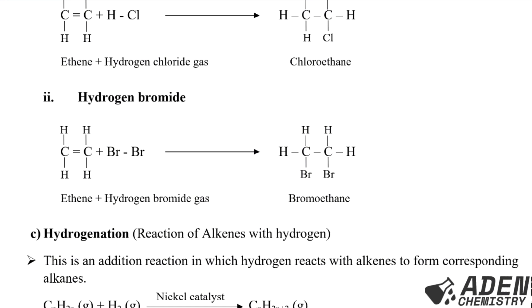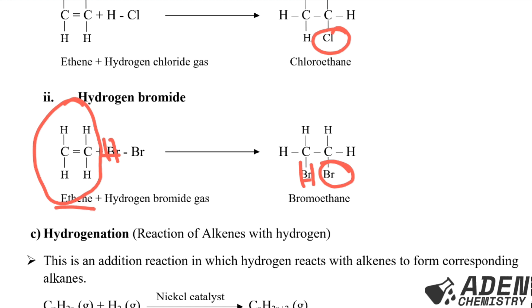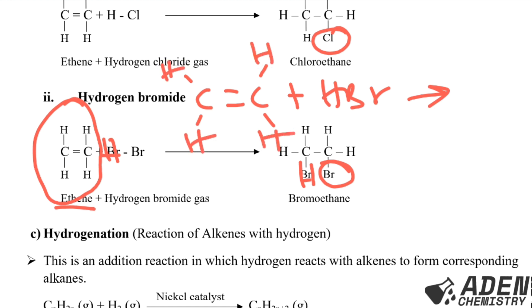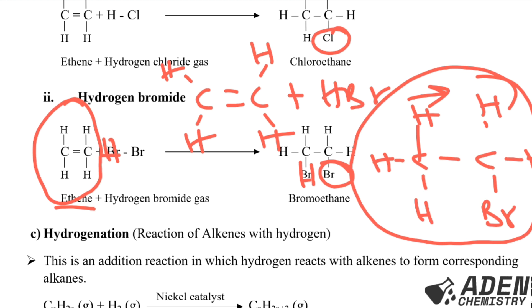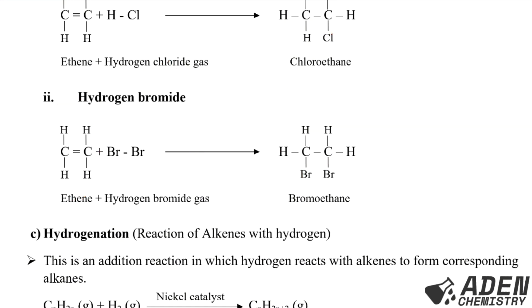For the reaction of ethene with hydrogen bromide: it works the same way as hydrogen chloride — the only change is replacing the chlorine atom with a bromine atom. The double bond breaks, the 4 hydrogen atoms in ethene remain, and the 1 hydrogen and 1 bromine atom from HBr are added. The product is bromoethane.